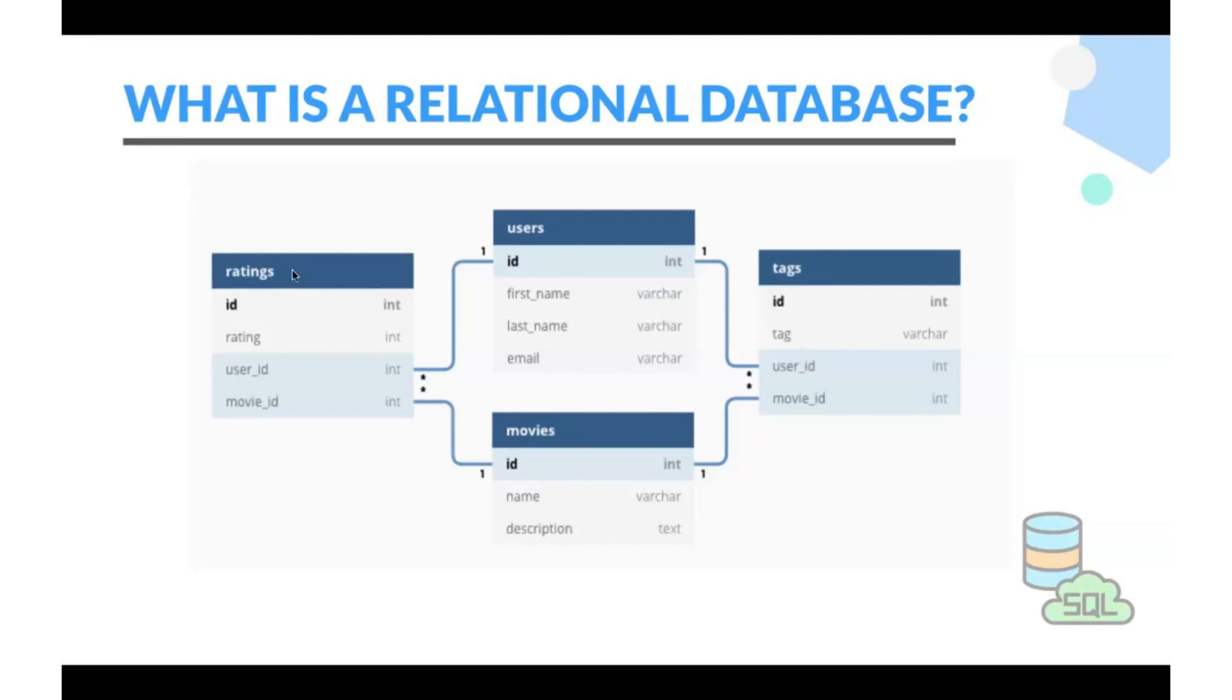Now as we can see this ratings table and these users table, are they connected to each other? Is there any relationship within these two tables? Yes, right? Ratings table have user ID and then users table is also having ID.